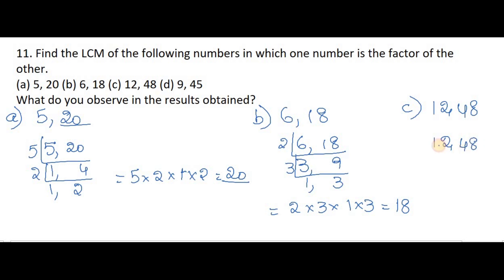So if the first number is a factor of the second number, then automatically the second number will become our LCM.